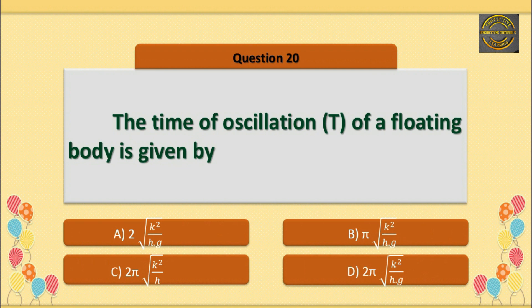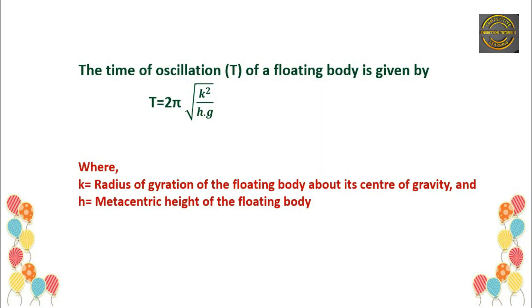Q20: The time of oscillation t of a floating body is given by — Option D is correct. The formula is: t = 2π × √(k² / (h × g)), where k = radius of gyration of the floating body about its centre of gravity, and h = metacentric height of the floating body.